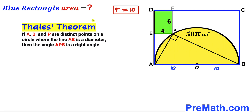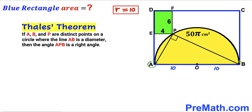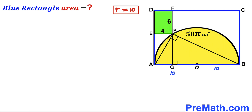Let's recall Thales' theorem: if A, B, and P are three distinct points on a circle where AB is the diameter, then angle APB is a right angle — 90 degrees. So angle APB is 90° since AB is the diameter and A, B, P are all on the semicircle. We extend line FP all the way to point Q, and since we're dealing with the green rectangle, this angle is also 90°.